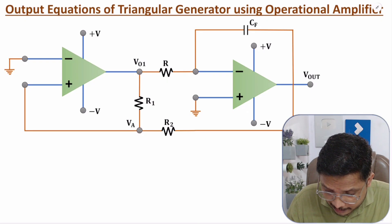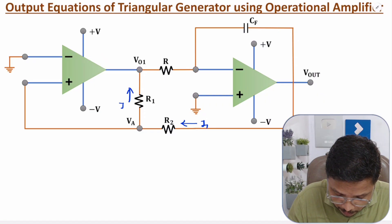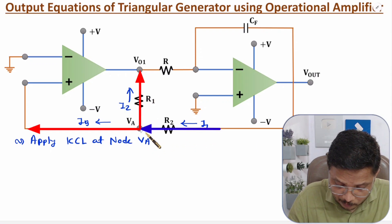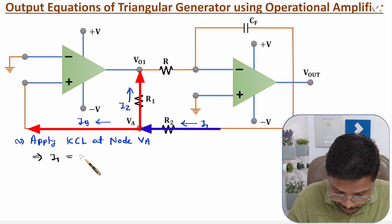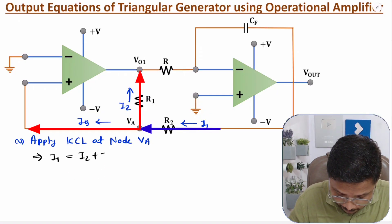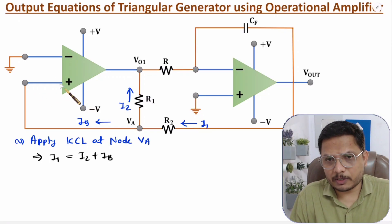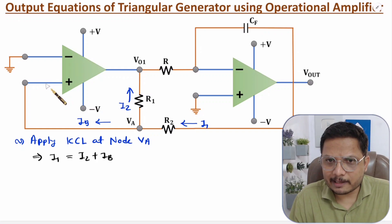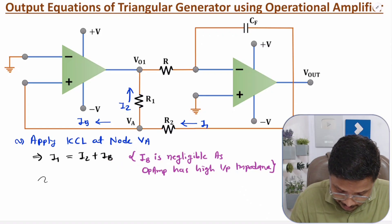At node VA, let the entering current be I1, the leaving current in one branch be I2, and the leaving current into the op-amp positive terminal be IB. Applying KCL: I1 = I2 + IB. Since the op-amp has very high input impedance, IB is negligible, so I1 = I2.